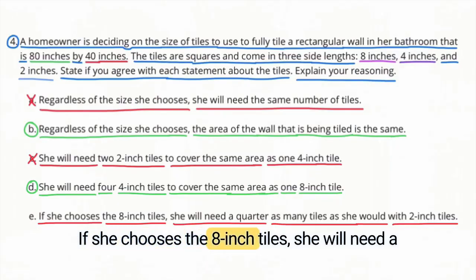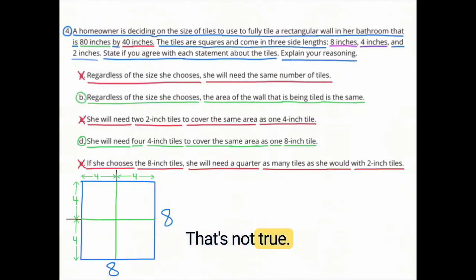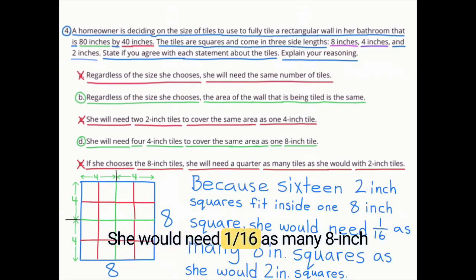E. If she chooses the 8-inch tiles, she will need a quarter as many tiles as she would with 2-inch tiles. That's not true because 16 2-inch squares fit inside one 8-inch square. She would need 1-16th as many 8-inch squares as she would 2-inch squares.